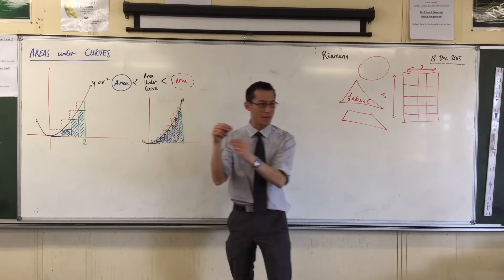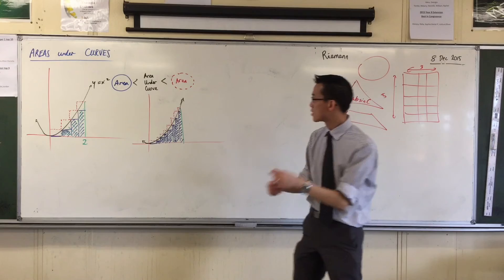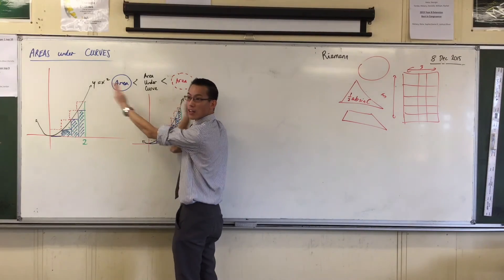The blue area underestimates the area under the curve, and the red area overestimates the area under the curve. But the overestimation and the underestimation are now smaller. So these two numbers are going to get closer to each other.